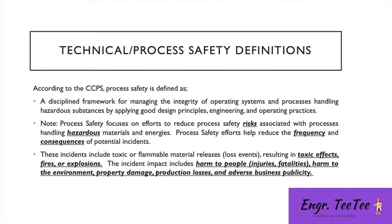Key terms highlighted here — hazardous, frequency, consequences, and risk — are important to understand. Incidents in process safety include toxic effects, fires, and explosions. The impacts include harm to people, harm to the environment, property damage, production losses, and damage to the business's reputation.